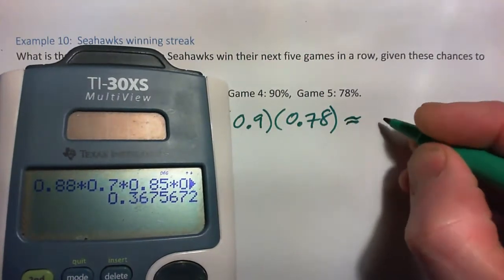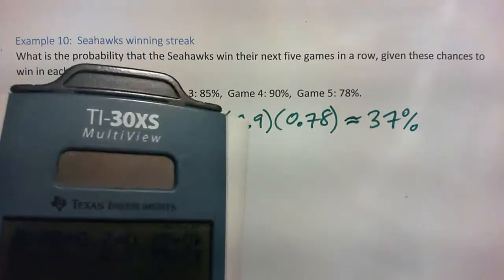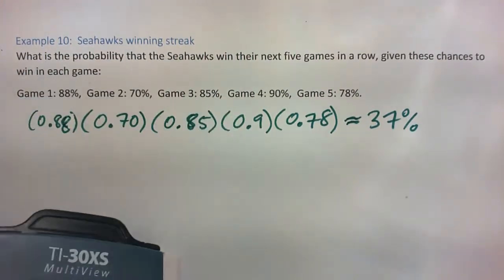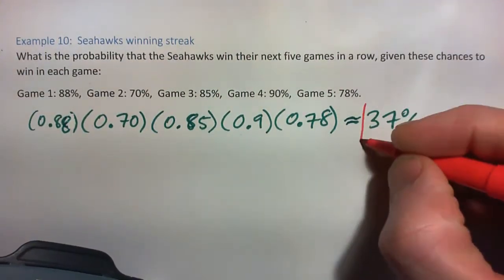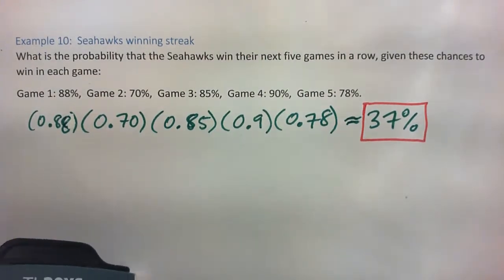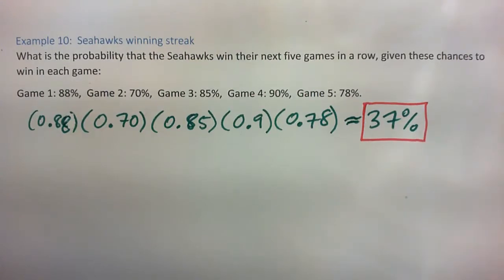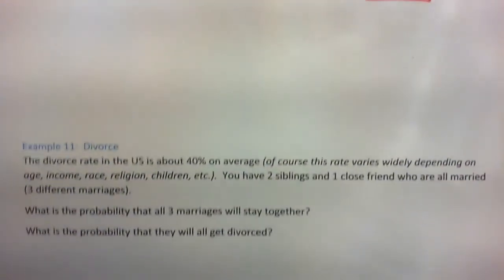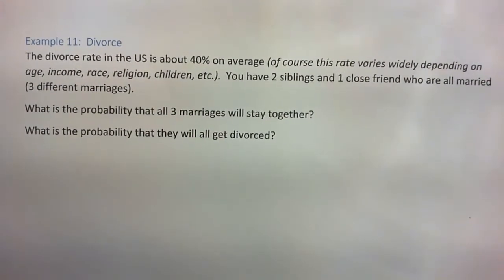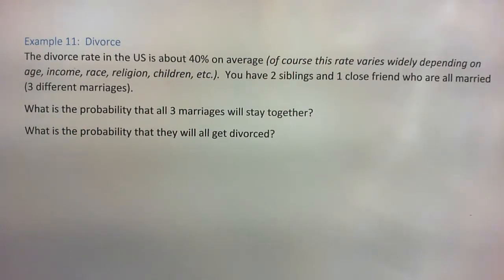Each game they're very heavy favorites, yet to win every single game all in a row the chances are lower than you might like — about 37%. Those five games in a row, they're heavy favorites, yet it's likely that they're going to lose at least one anyway. Most likely they won't win them all in a row. So this tries to explore real-life examples rather than just tossing coins and rolling dice all the time.